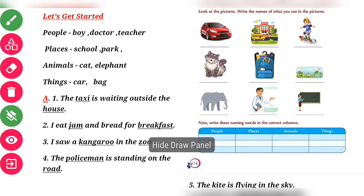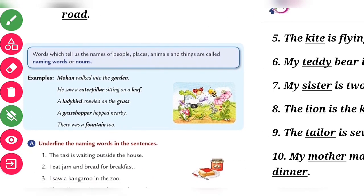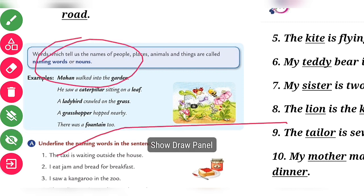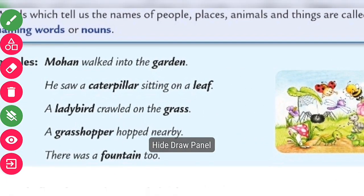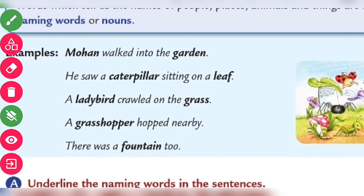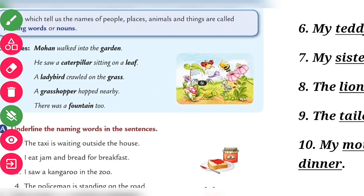Let us move to the next page. Words which tell us the name of a person, place, or thing are called naming words or nouns. Now see: Mohan walked in the garden. He saw a caterpillar sitting on leaves, a ladybird crawling on the grass, a grasshopper hopped nearby, and there was a fountain too. These are the naming words.